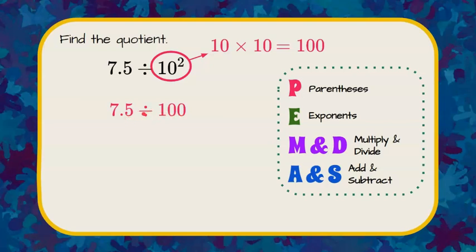So when we divide, we're finding the quotient, which is the answer to a division problem. We're going to move our decimal point two decimal places because we have two places over here, two 0s.